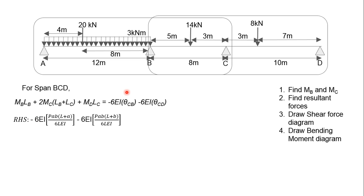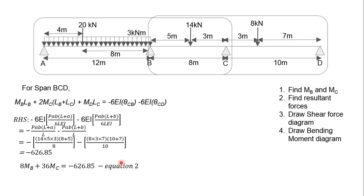For the right-hand side, because there's no uniform load now, we are using the formula for concentrated load. So for CB and CD, CB will be the force on the left-hand side and CD will be the force on the right-hand side. So we sub in the formula, cancel away 6EI, and you get, sub in the values and you get negative 626.85. That's our equation two.